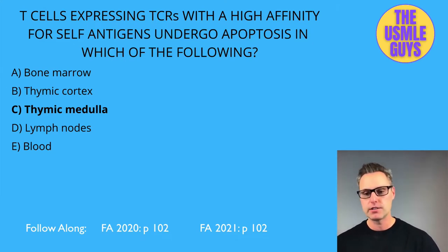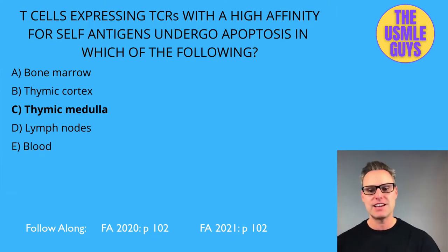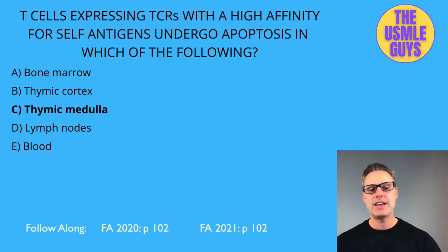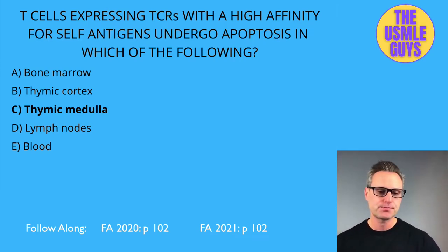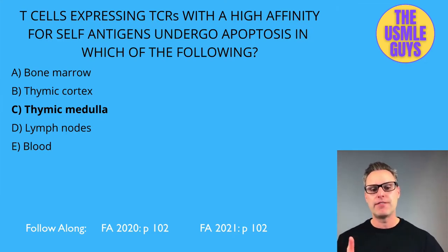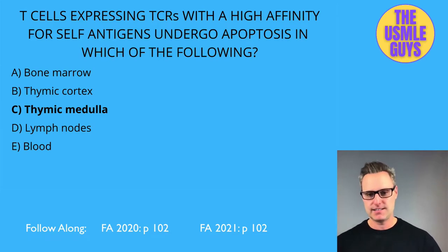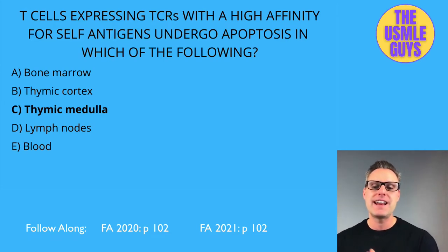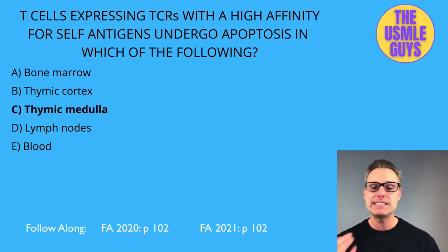Th2 cells secrete interleukins IL-4, 5, 6, IL-10, and IL-13, which activate eosinophils and increase immunoglobulin E. Don't forget the interferons — alpha, beta, and gamma — which are part of the innate system and work by interfering with DNA and RNA viruses, as well as activating anti-tumor immunity.